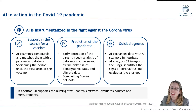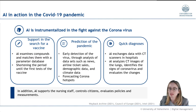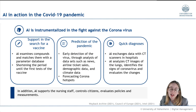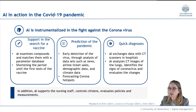First, AI can assist in the search for a vaccine and further vaccine variants by checking compounds and matching them against a database. This can definitely shorten the time to test the first vaccines or the following vaccines of new variants.